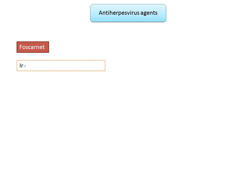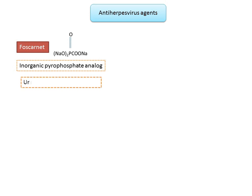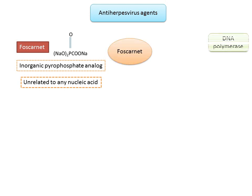Foscarnet — trisodium phosphonoformate — is an inorganic pyrophosphate analog inhibitory for all herpes viruses and HIV. An important aspect of foscarnet is that it inhibits viral nucleic acid synthesis irrespective of the type of nucleic acid; it is unrelated to any nucleic acid and can act on both DNA and RNA.